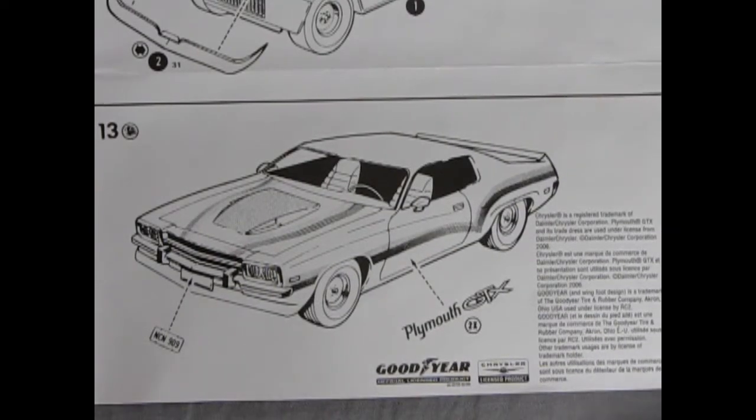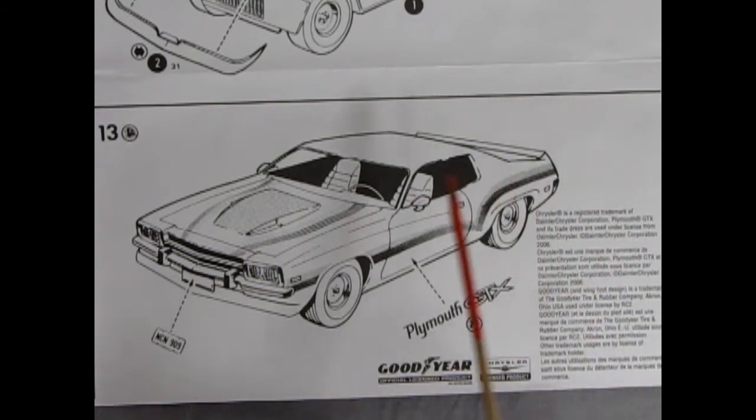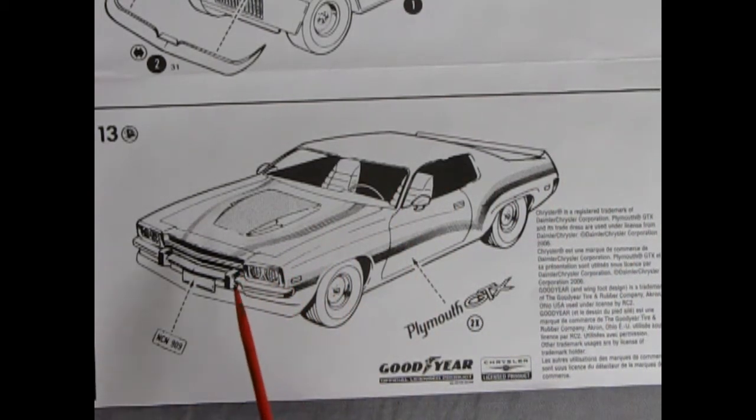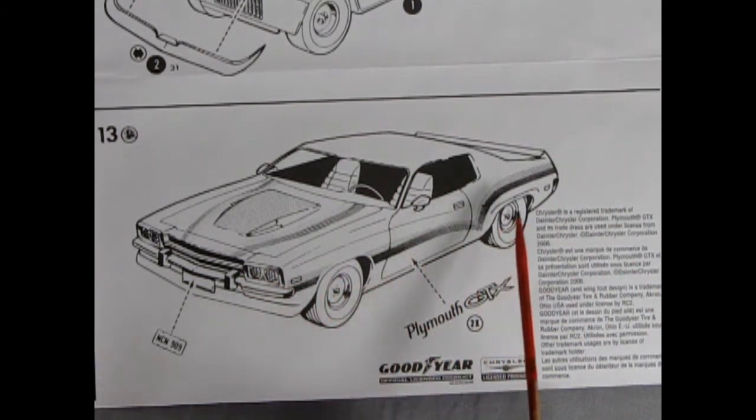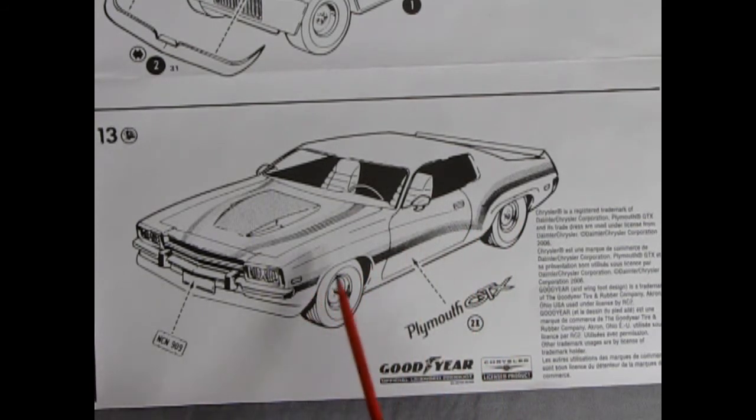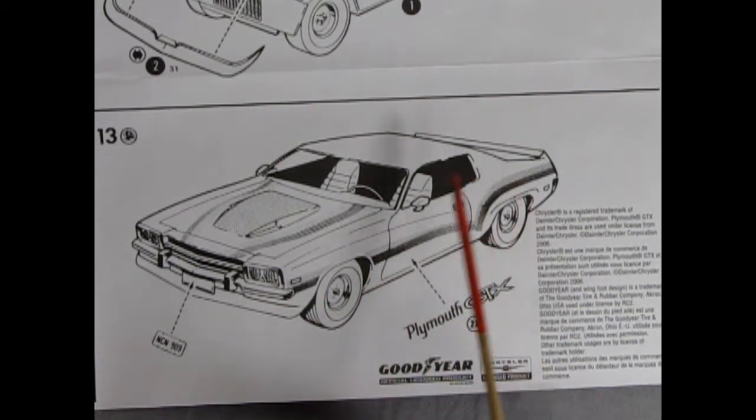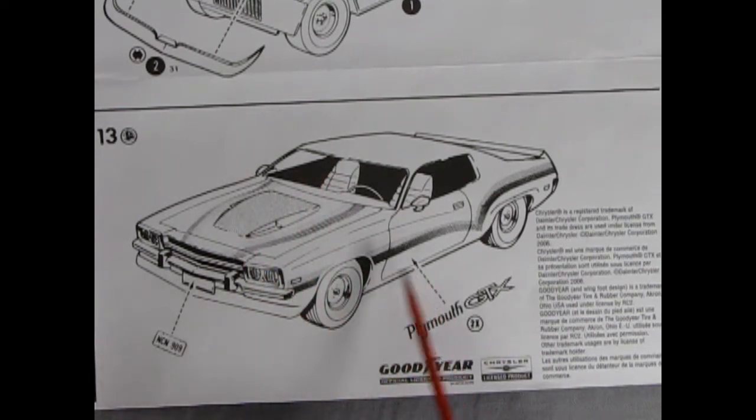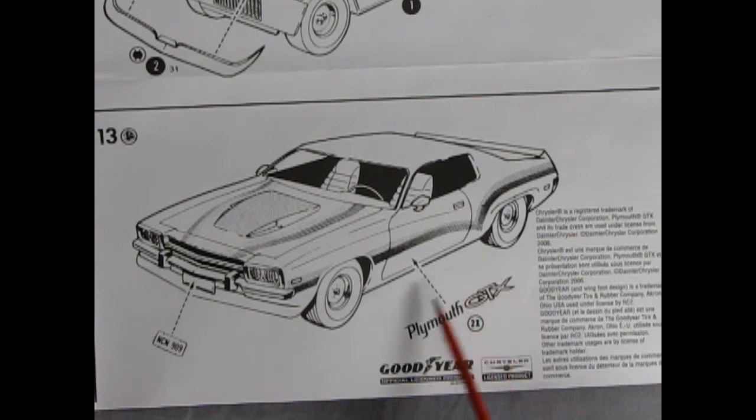Step 13 is our final assembly step which shows our decal location. And these are not the actual Plymouth GTX decals which you saw on the box top. These are from a 1980s street machine and well they look very 80s for sure. And there's our front license plate going in place as well as the Plymouth GTX on the side.